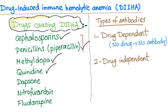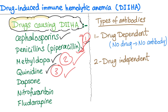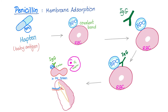Cephalosporin and Penicillin are quite similar, so we have three different stories: the Penicillin story, the Methyldopa story, and the Quinidine story. Story number one: the great Penicillin. Penicillin has a group called BPO or Benzyl Penicilloyl. It acts like a hapten, or a baby antigen.